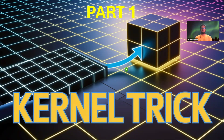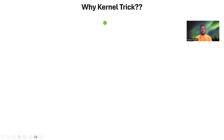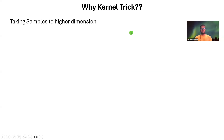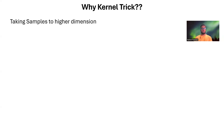So first of all, why do we need kernel trick? Kernel trick is mainly used to take samples to a higher dimension. If you have a sample with three dimensions, meaning your dataset has three features, and you want to transform that sample to a higher dimension — say five, ten, or even infinite dimensions theoretically — then you can use kernel trick to do that.